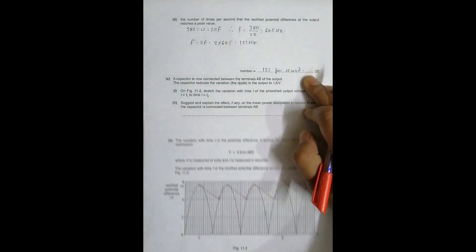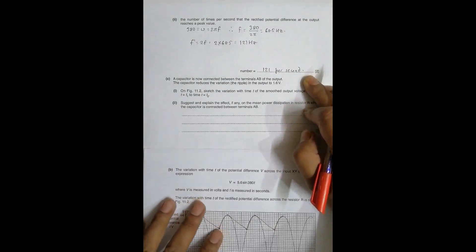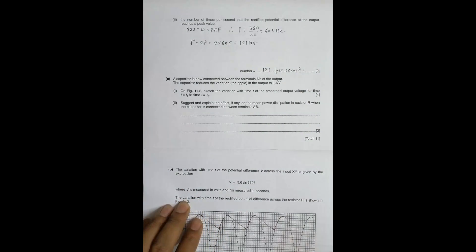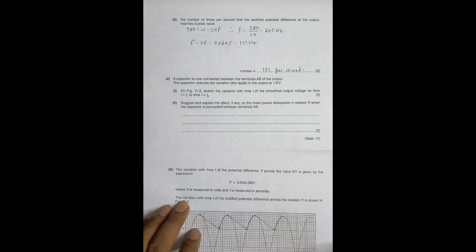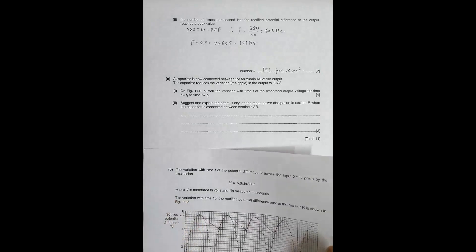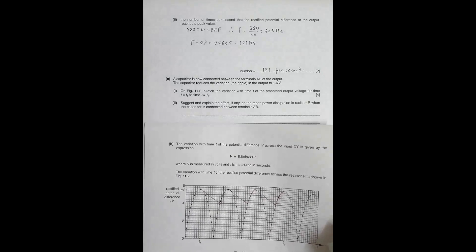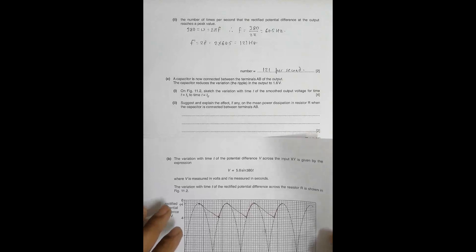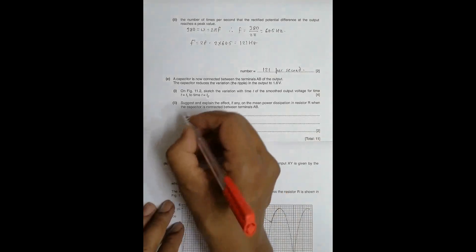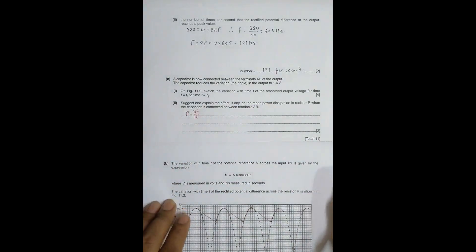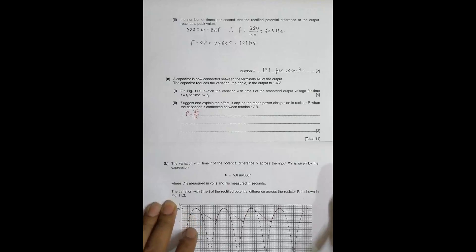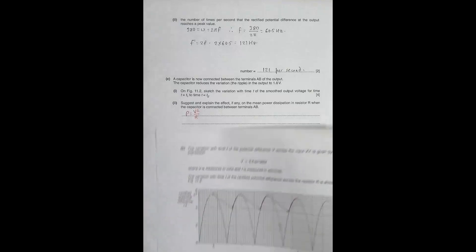Now, the last question is explain the effect if any on the mean power dissipation in resistor R when the capacitor is connected across the terminal. So it asks us the mean power. And what we have to know from here is the mean power will be increased. It's because we know that power is equal to V squared by R, or I can say V_RMS squared by R.